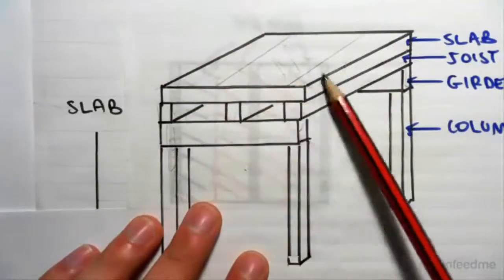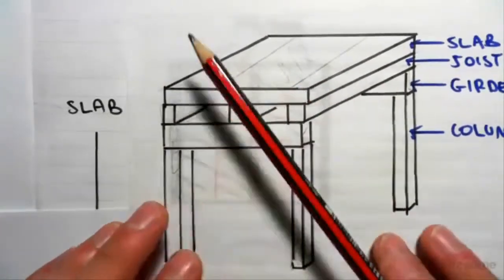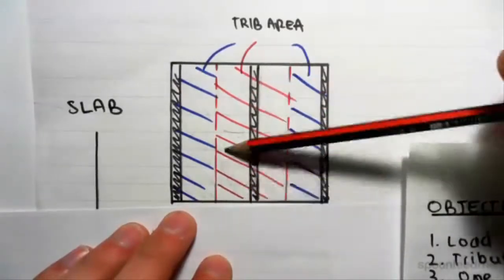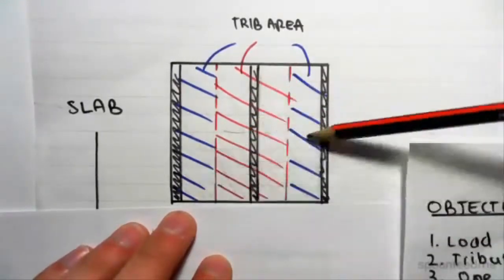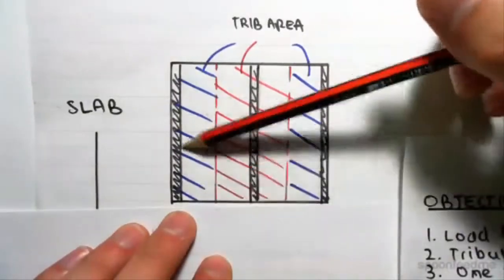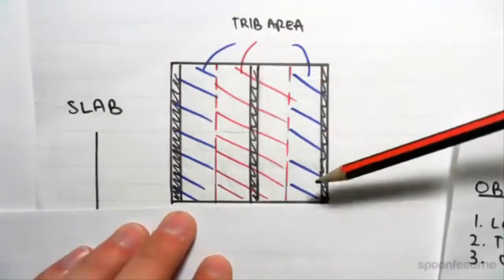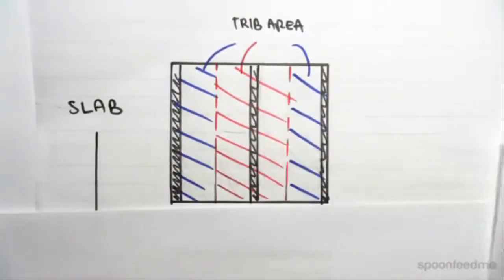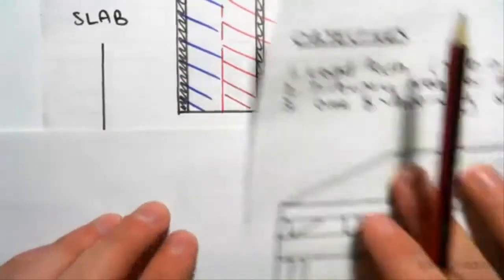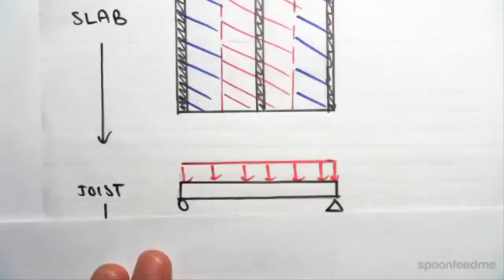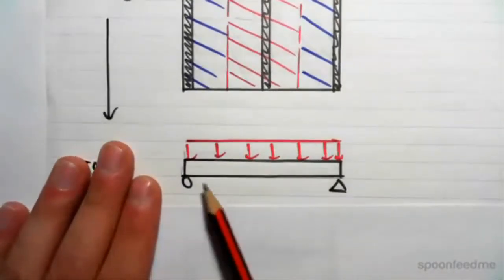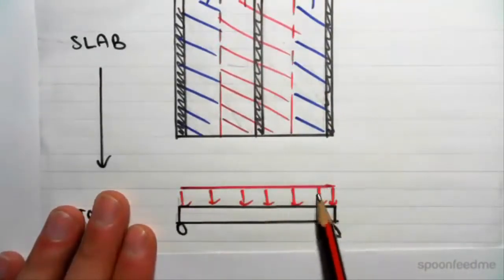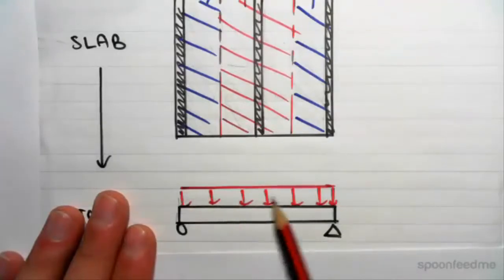Looking from above, the middle joist takes the amount shown in red and the two end joists each take the amount shown in blue. We can distribute all the slab loading into those joists. For a typical joist, we get a UDL — the slab has an area load in kPa, and we convert that to a UDL in kilonewtons per meter on the joist.